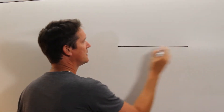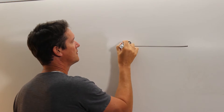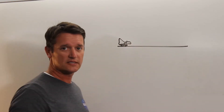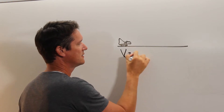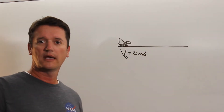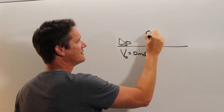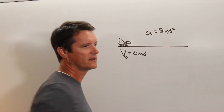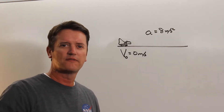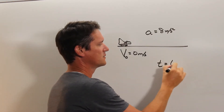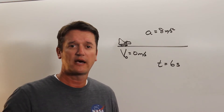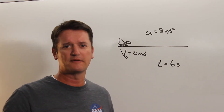I'll give you a problem. I want you to pause the video, work through the problem, and then we'll start it back up and see how you did. Here we go, the first one. An airplane is taking off. It starts from rest, which means our initial velocity is 0 meters per second, and it accelerates at 8 meters per second squared. If it does this for 6 seconds, my first question is, how fast is it going? Take some time and figure that out.